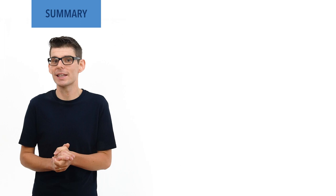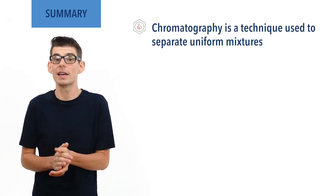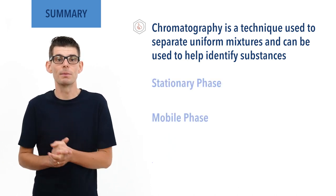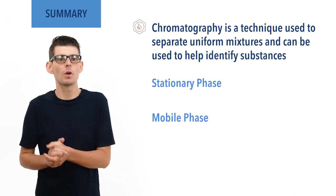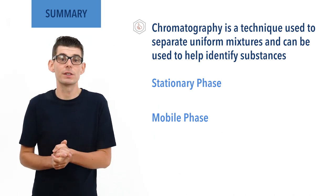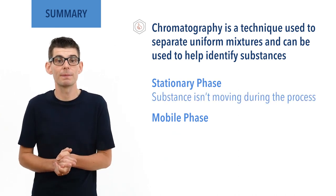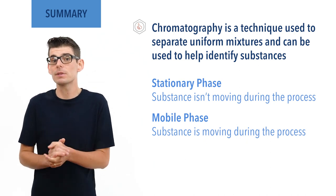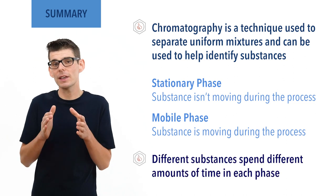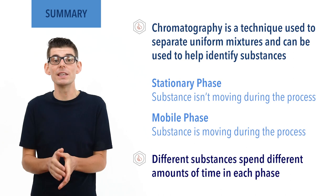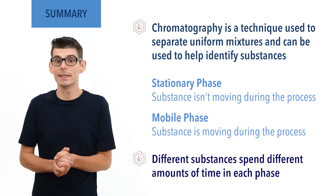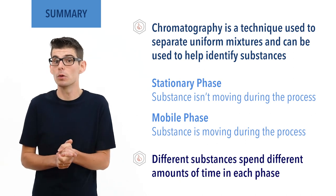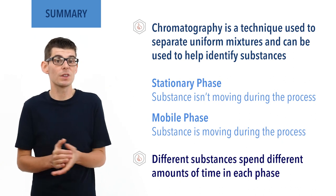To summarise: chromatography is a technique used to separate mixtures and identify substances. All types centre around the same idea of a stationary and mobile phase, and the length of time a substance spends in one phase compared to the other. The stationary phase is when a substance isn't moving; the mobile phase is when it is moving, usually in a solvent. Different substances spend different amounts of time in each phase, so if they all start together they finish at different times, enabling separation. The time spent in each phase is based on the properties of the substances, such as their polarity.